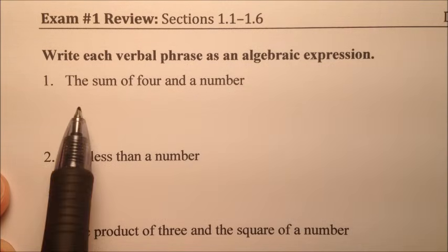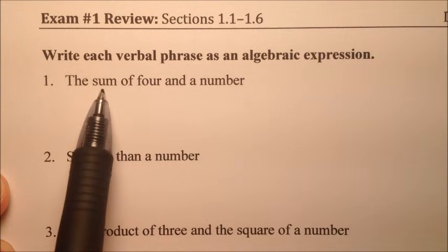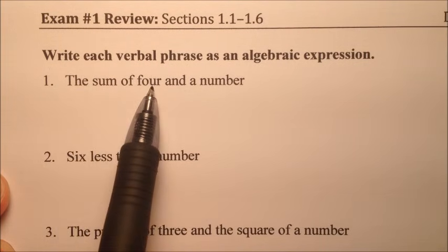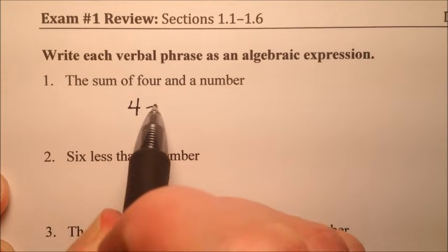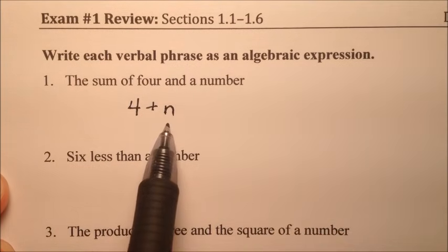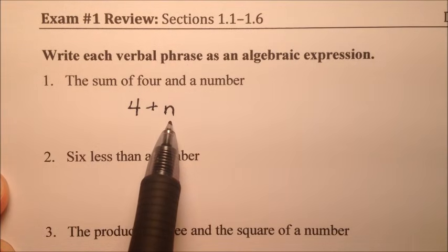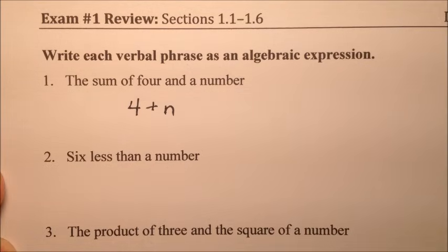The first one says the sum of four and a number. Sum means we're going to add — four and a number. So we're going to say four plus a number. Recall that it doesn't matter what variable you use. N is fine because n usually stands for number, but you can just as easily use x, y, p, or whatever you want.